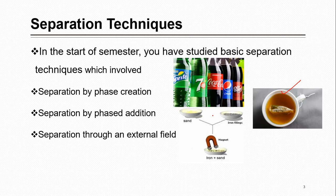There is also separation through an external field, where you apply some external field to separate a mixture. A common example from FSC class is using a magnet to separate iron filings from sand — the external field is magnetic. On industrial scale, a technique called electrophoresis is used. Here you do not add a new phase or create one; you apply an external force to achieve separation.